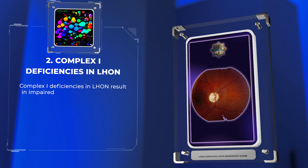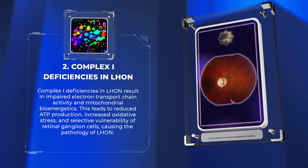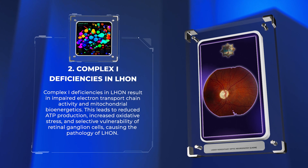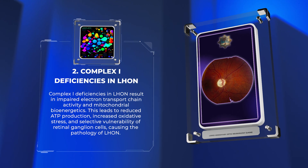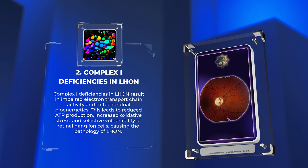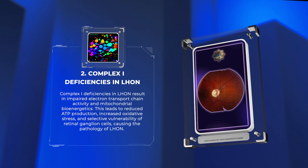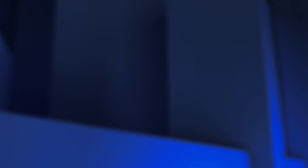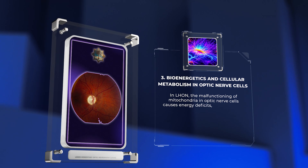Complex I deficiencies in LHON result in impaired electron transport chain activity and mitochondrial bioenergetics. This leads to reduced ATP production, increased oxidative stress, and selective vulnerability of retinal ganglion cells, causing the pathology of LHON.